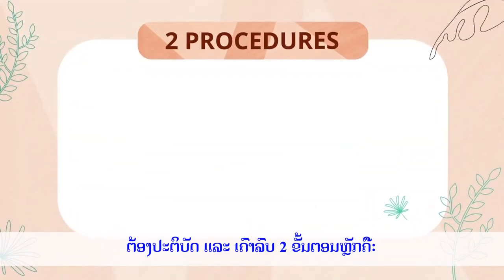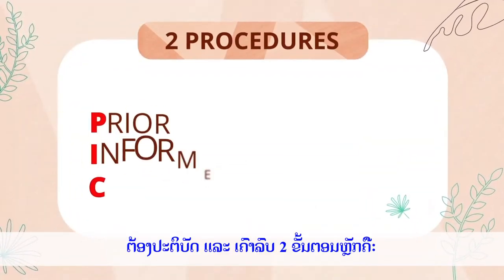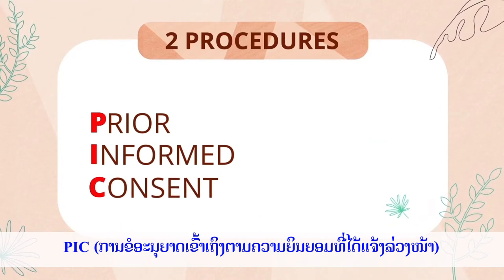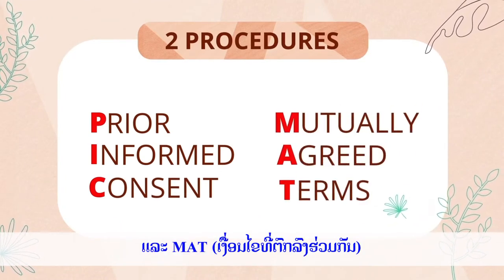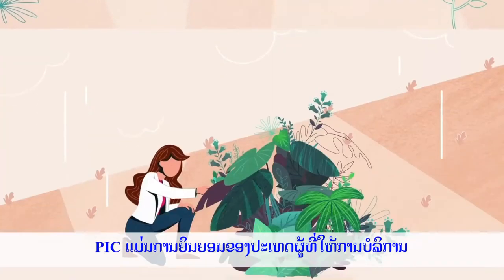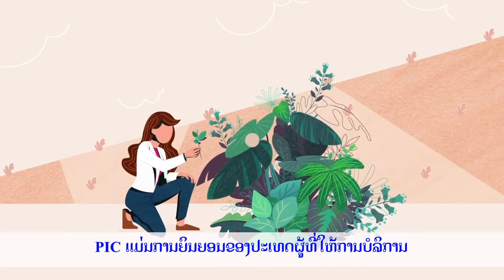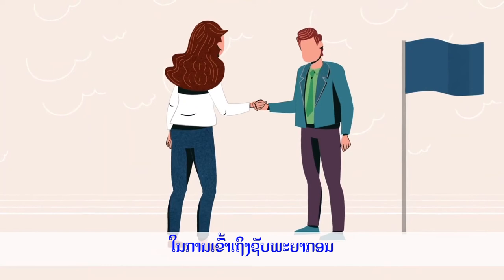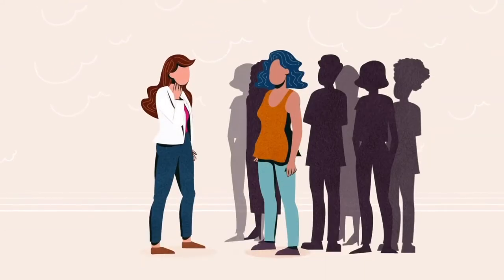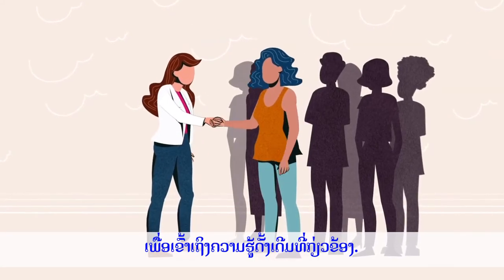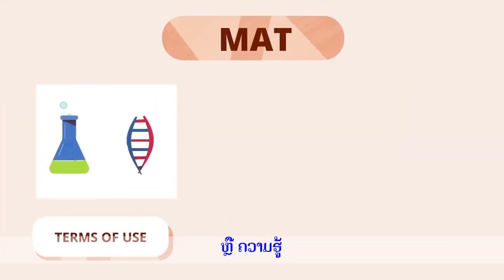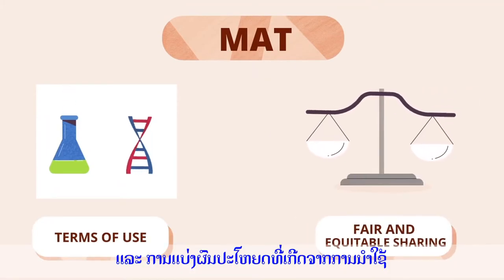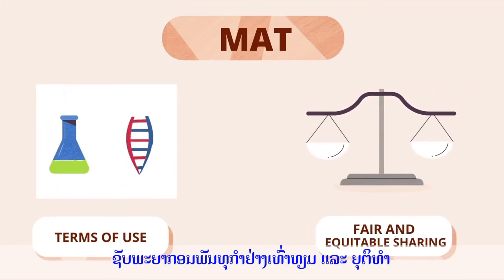Laura and her team must respect two main procedures: PIC — prior informed consent — and MAT — mutually agreed terms. PIC is the consent of the provider country for access to resources, or of the local communities for access to the associated traditional knowledge. MAT is a contract that defines the conditions of use of materials or knowledge and the fair and equitable sharing of the benefits arising from their use.